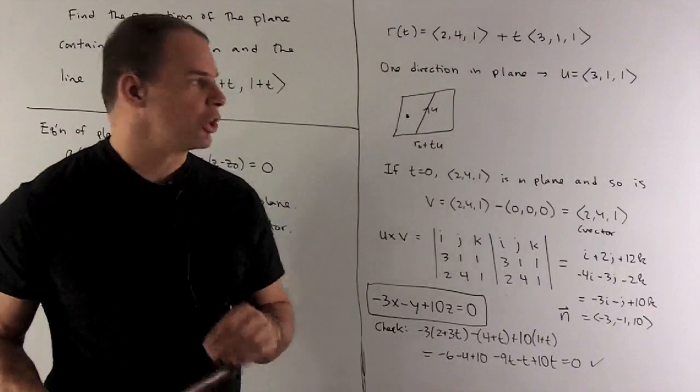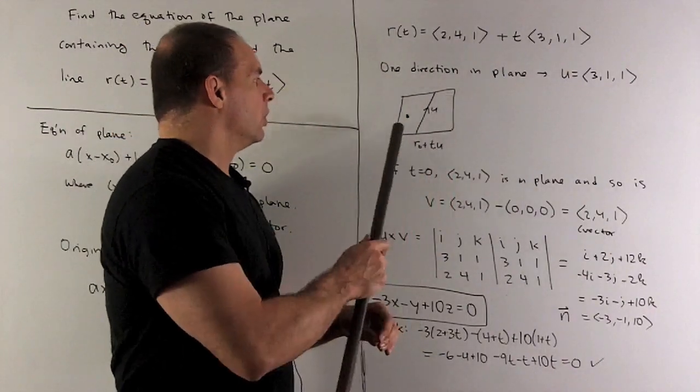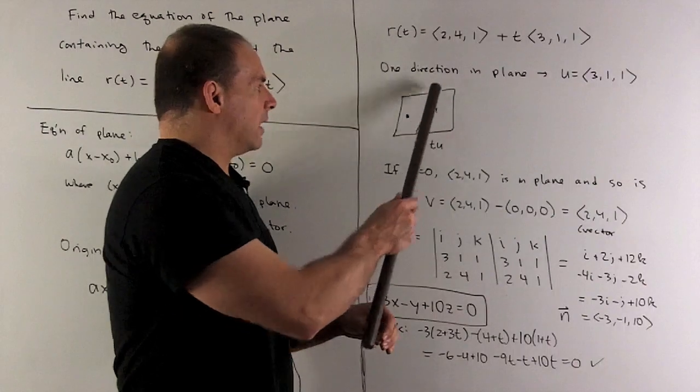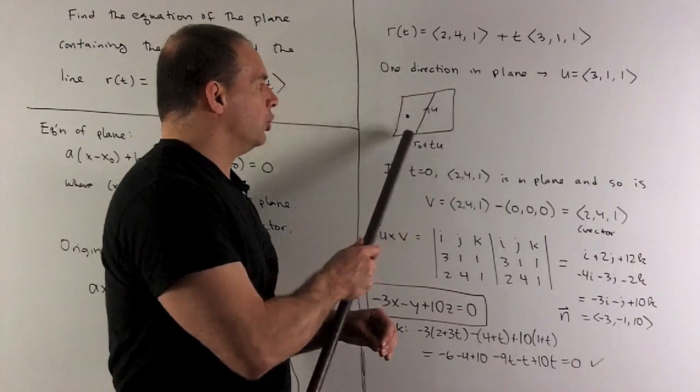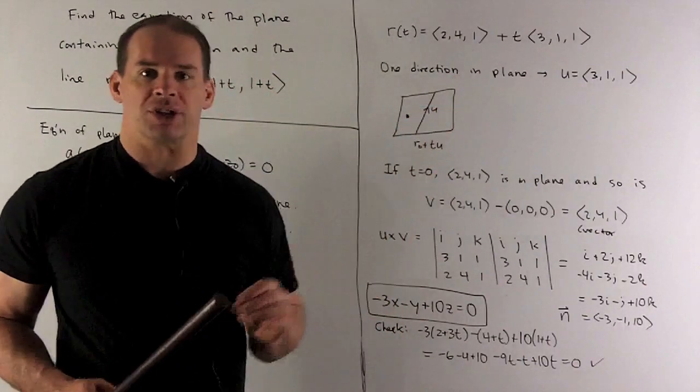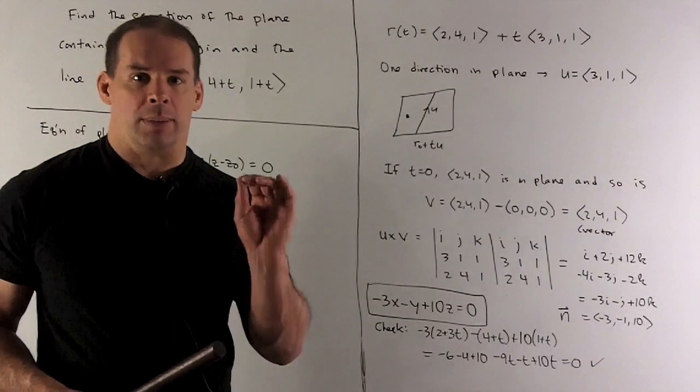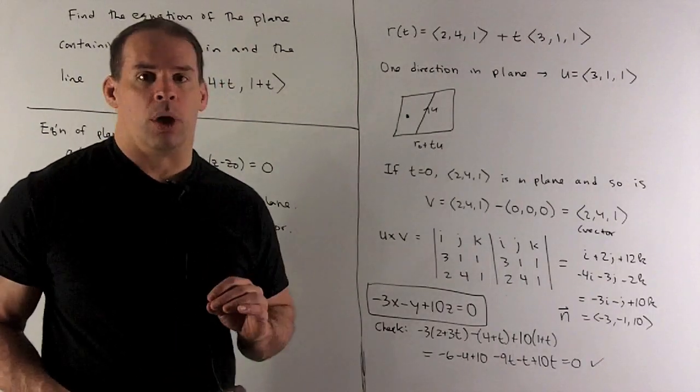So if we look at the picture, we have the plane, we have our origin there, and then I'm going to have my line, and then there's going to be a vector u which just points in the direction of the line. So that'll be my u. Our u's going to be (3, 1, 1).